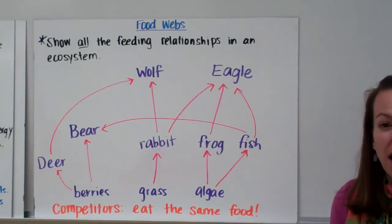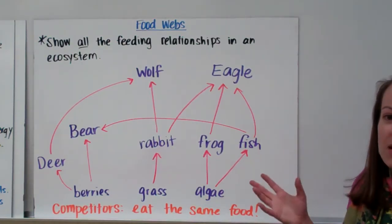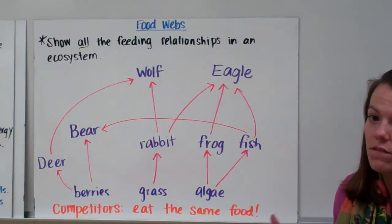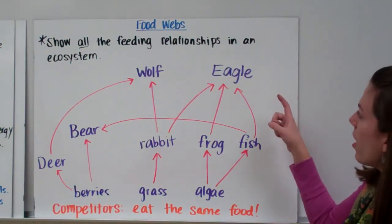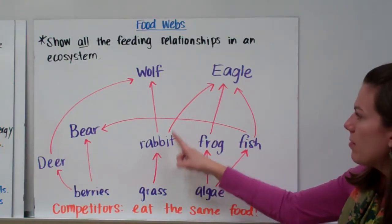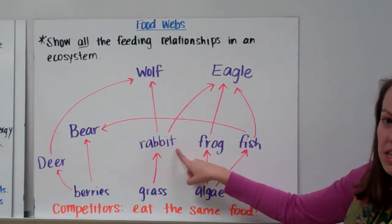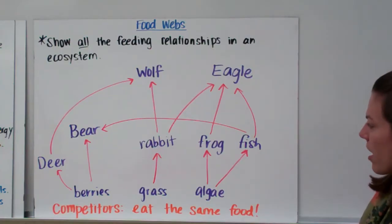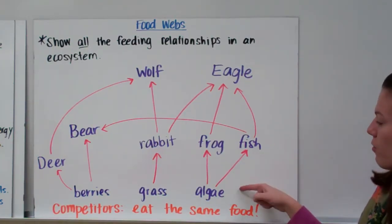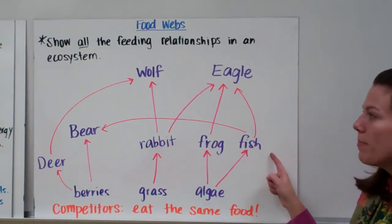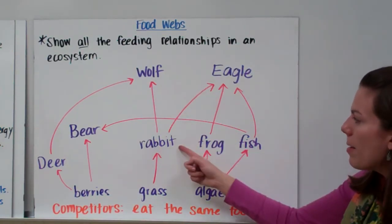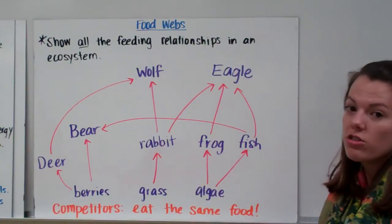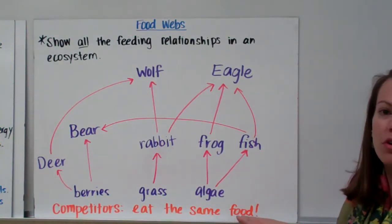One thing you need to know is how to find which organisms are competing with one another for food. Any time two organisms are going after the same food, they are competitors. For example, both the wolf and the eagle want to eat the rabbit, so they are competitors. The frog and the fish are both competing for the algae, so they are competitors too. We wouldn't say that the wolf and the rabbit are competitors, because the wolf eats the rabbit — not the grass that the rabbit eats. A competitor is anything that eats the same food as another organism.